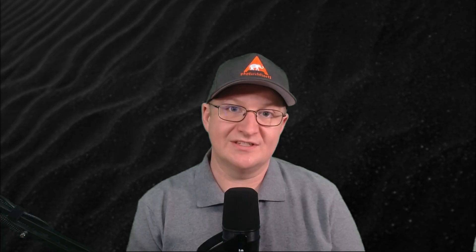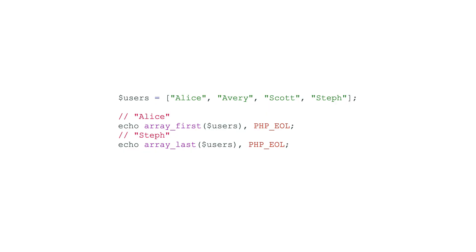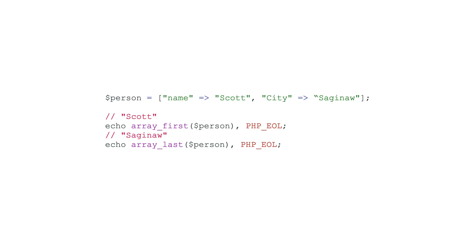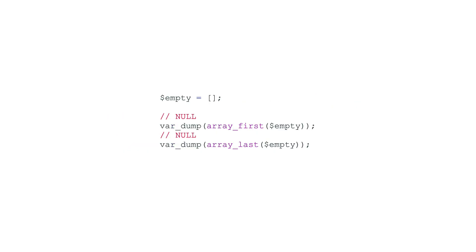Whenever I prepare for these videos I always go through the list of new features and I'm always shocked when I find something that doesn't exist yet but has now been added. PHP 8.5 is adding two functions to retrieve the first and last values of an array: array_first and array_last respectively. They work more or less as you'd expect, also work with associative arrays, and if you have an empty array they both return null.